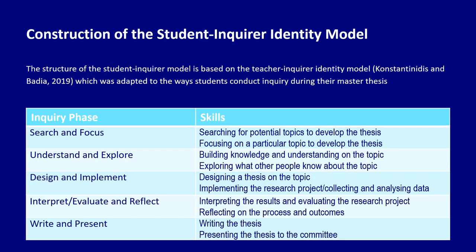The structure of the student Inquirer model is based on the teacher Inquirer model, which we published last year. The teacher Inquirer identity consists of ten teacher skills related to the five phases of the inquiry process: scan and focus, understand and explore, plan and implement, evaluate and reflect, and write and present. In order to adapt the teacher Inquirer identity model to the ways students conduct inquiry during their master's thesis, we reviewed bibliography related to researching in social sciences, and we realized that the five phases of the inquiry process emerge from the topics of each book, even if not in the same order necessarily. Therefore, we decided to maintain the five main phases and make only some changes.